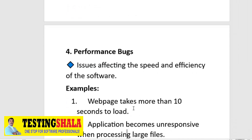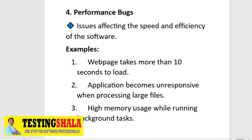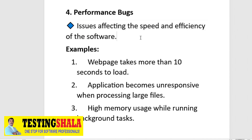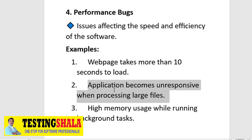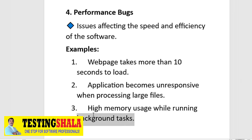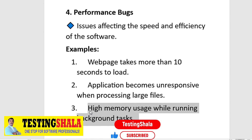The fourth type of bugs are performance bugs. Performance bugs affect the speed and efficiency of the software. Examples include: a webpage takes more than 10 seconds to load, an application becomes unresponsive when processing larger files, or high memory usage while running a background task. All these should be logged under the performance bugs category.